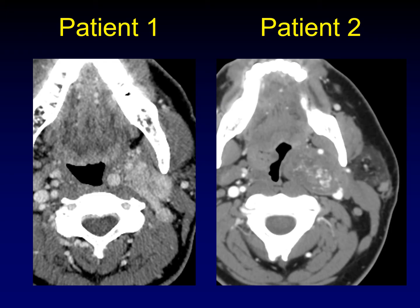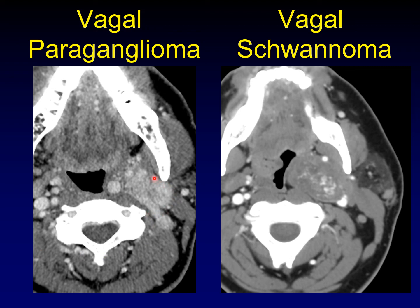What's different about them? The most obvious thing, I think, is their enhancement pattern. There is uniform enhancement throughout this mass — and how enhancing is it? It's almost essentially the same enhancement as the surrounding vessels; that's a lot of enhancement. Whereas in this mass it's pretty heterogeneous — areas of enhancement and areas of non-enhancement geographically interspersed because of Antony A and Antony B cells in a schwannoma. Whereas this extensive enhancement, when the enhancement matches the vessels, we start thinking about one of our most vascular lesions: the paraganglioma. So both lesions arose along the course of the vagus nerve between the jugular vein and carotid artery, but two different things arise from the vagus nerve — a paraganglioma and a schwannoma.